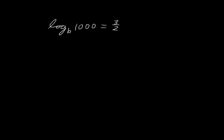Well the properties of logarithms means that this can be rewritten as b to the 3 halves power equals 1,000. So let's write that b to the 3 halves power equals 1,000.